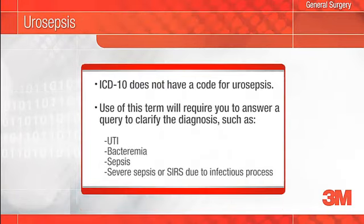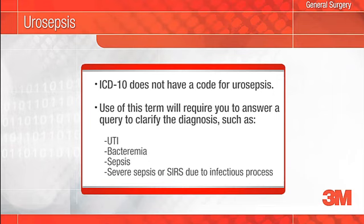What is new with urinary tract infections is that the diagnosis of urosepsis can no longer be coded in ICD-10. In ICD-9, a diagnosis of urosepsis defaulted to the code for an unspecified urinary tract infection. If you record a diagnosis of urosepsis in the ICD-10 environment, it will generate a query asking you for clarification. If by using the term urosepsis you mean the patient has a UTI, then document UTI. If you mean the patient has septicemia from a urinary source, make sure to document this — for example, E. coli sepsis due to UTI.